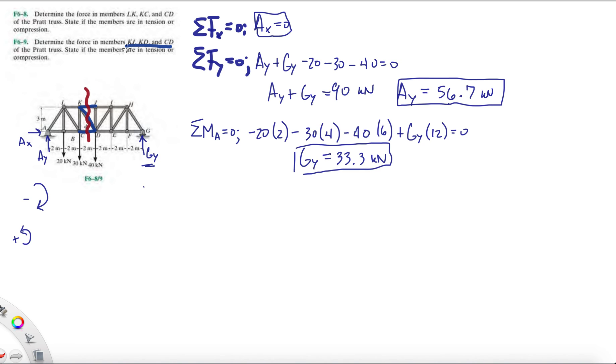Like I said, our goal is to find KJ, KD, and CD, and whether it's in tension or compression. So we made the cut at this red line. You want to isolate the whole left side of the truss or the whole right side. Usually pick the side that's more convenient or just the side that I'm more comfortable with. In this case, I'm just going to pick the left side.